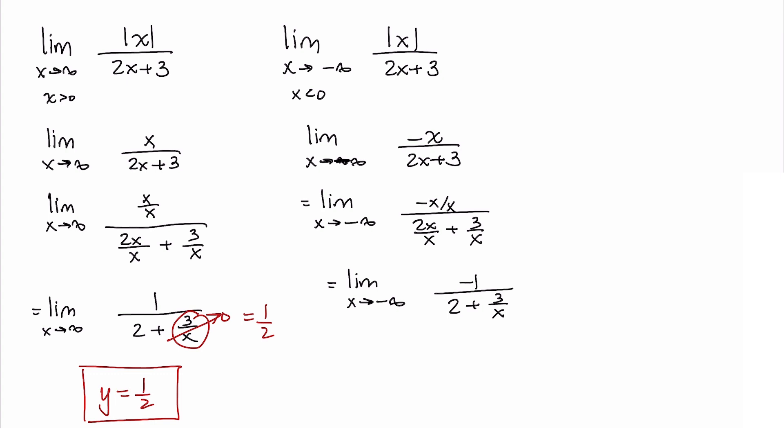A very similar thing happens here as in the other limit. We have negative 1 in the numerator, 2 in the denominator, and 3 over x will tend to zero.